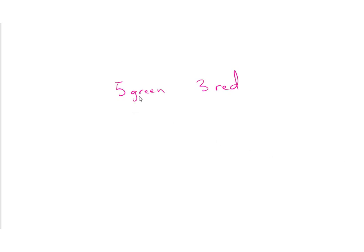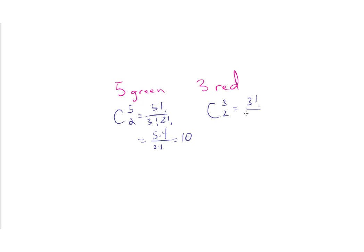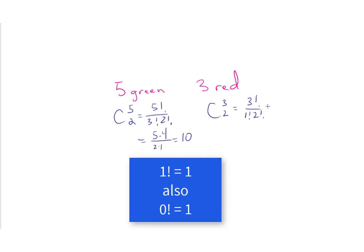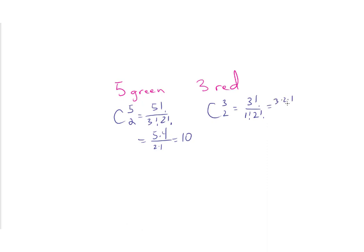Suppose you had the question: how many more ways can I choose 2 green marbles than 2 red marbles? Combination 5 choose 2 is 5 factorial over 3 factorial times 2 factorial, which is 5 times 4 divided by 2, giving 10. Combination 3 choose 2 is 3 factorial over 1 factorial times 2 factorial, which is 3 times 2 times 1 over 2 times 1, giving 3. So how many more ways to choose 2 greens than 2 reds? The answer is 10 minus 3, which is 7.